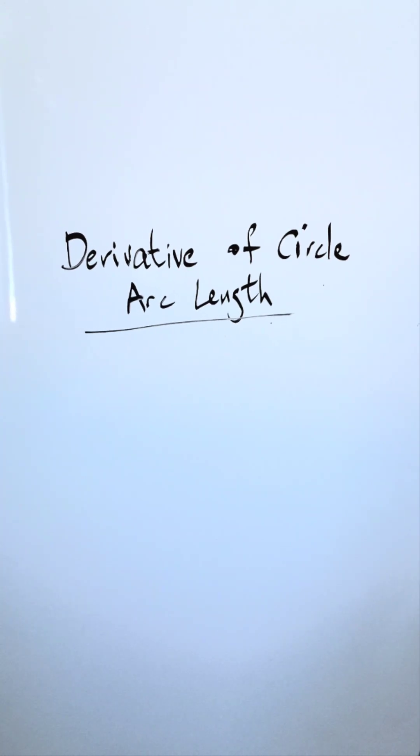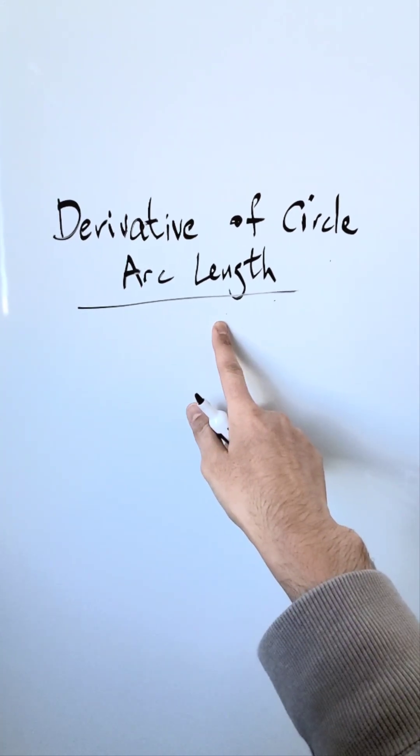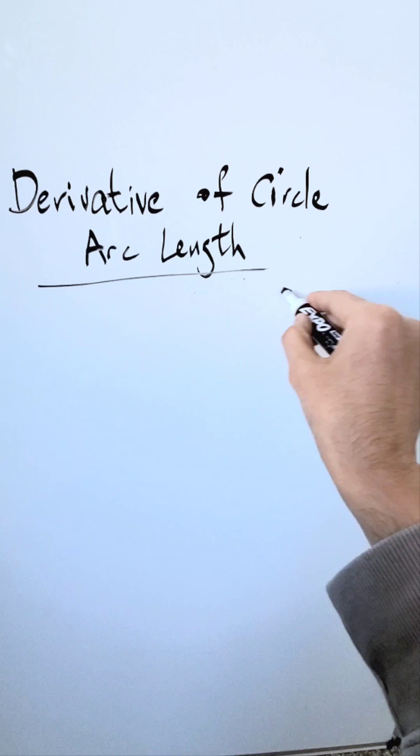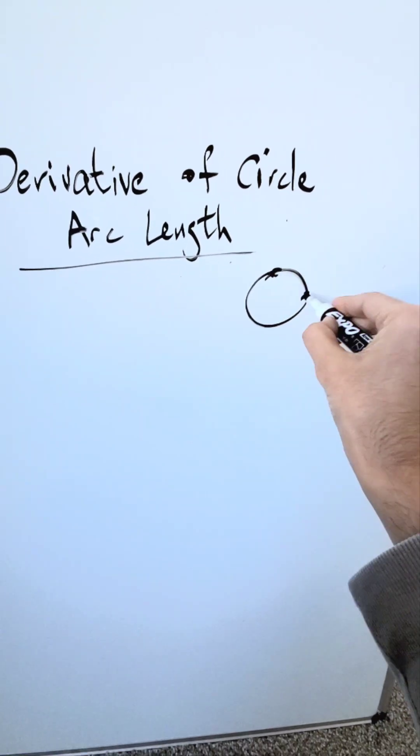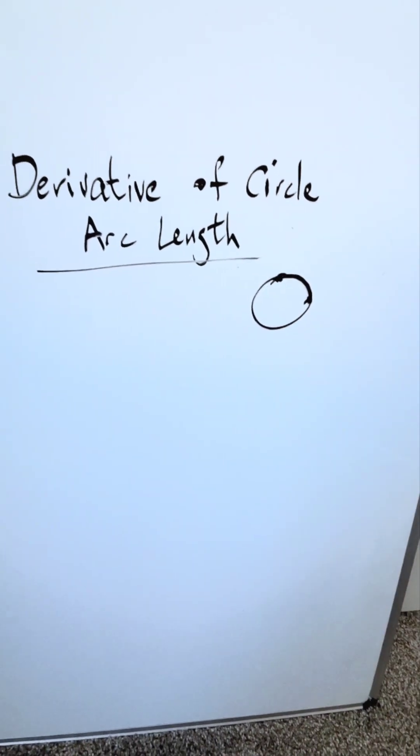Let's examine the concept of the derivative of a circle arc length. You know what an arc length is - if you're looking at a circle from one point to another, there's a certain arc. What is the length of the arc?